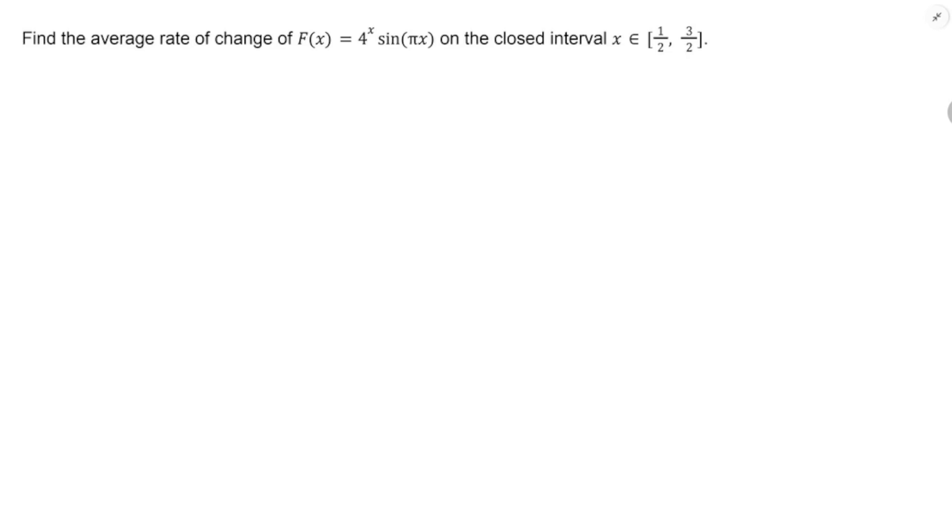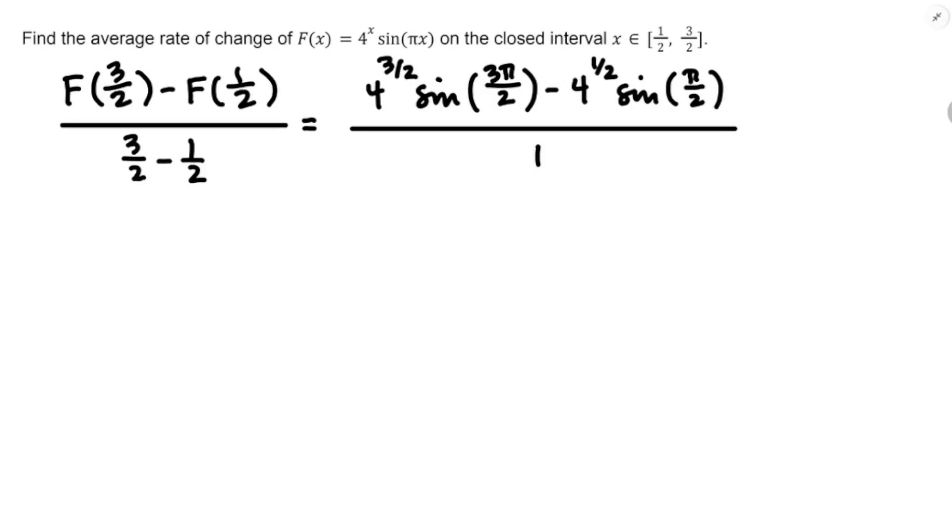Now another example I've got for you, which I think would be a good one to help remind you of some things from prior courses that you're going to need to know in here, is find the average rate of change of f of x equals four to the x times sine of pi x on the closed interval one half to three halves. I do definitely like this one. So we're going to take a fraction powers of four. We're going to have to do some unit circle trig. This is good stuff here. So if we're taking the average rate of change of f over one half to three halves, that's going to be f of three halves minus f of one half divided by three halves minus one half.